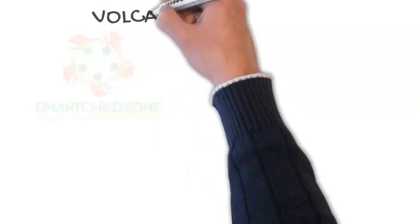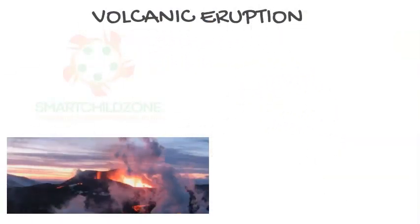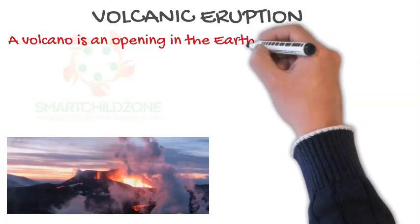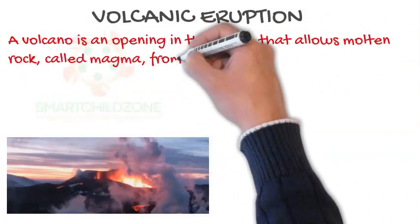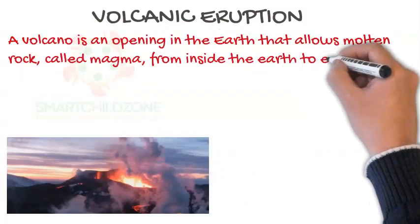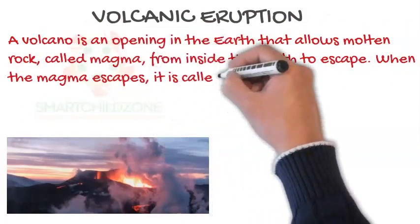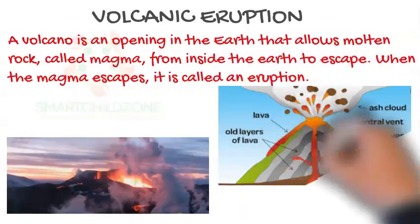Volcanic eruptions: a volcano is an opening in the Earth that allows molten rock, called magma, from inside the Earth to escape. When the magma escapes, it is called an eruption.